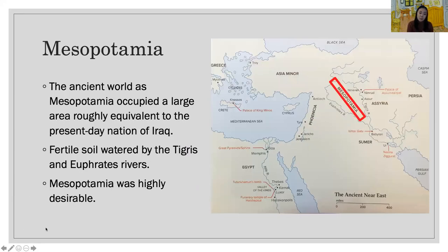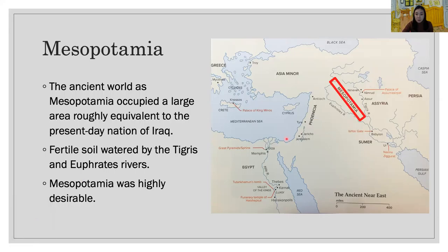Let's see Mesopotamia first. The region known to the ancient world as Mesopotamia occupied a large area roughly equivalent to the present-day nation of Iraq. The fertile soil watered by the Tigris and Euphrates rivers made Mesopotamia highly desirable, but a lack of natural boundaries made it easy to invade and difficult to defend.